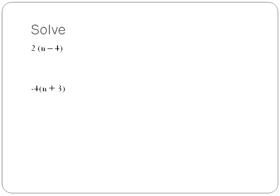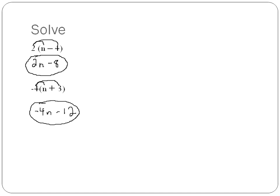When you've got questions with variables, you absolutely must use the distributive property. For example, 2 times (n minus 4): 2 times n is 2n, and 2 times negative 4 is negative 8 — that's my final answer, I cannot reduce it further. And negative 4 times (n plus 3): negative 4 times n is negative 4n, and negative 4 times 3 is negative 12 — that's my final answer. I can't join those together since they're negative 4n and minus 12.